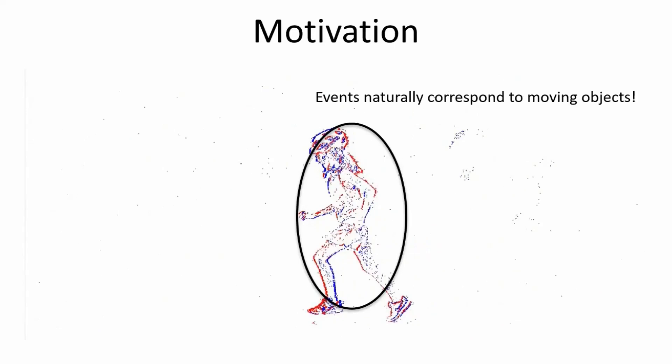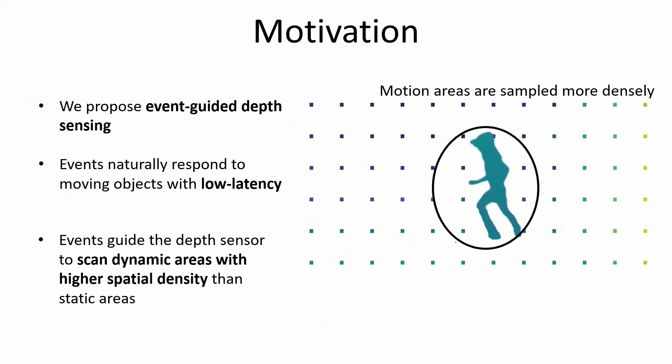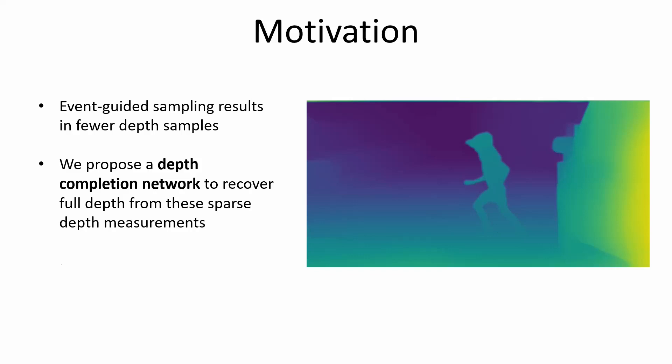Event Guided Depth Sensing attempts to exploit event cameras for low-latency depth foveation. Depth foveation scans areas of interest with higher spatial resolution, whereas other regions are scanned with lower spatial resolution. Event Guided sampling results in fewer depth samples. We propose a depth completion network to recover the full depth from these sparse depth measurements.